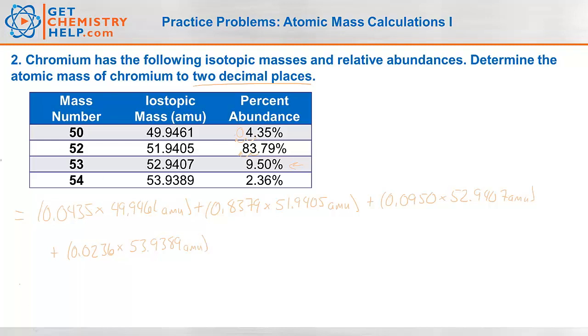Okay let's go ahead and solve these out. And remember it says to do everything out to two decimal places. So this one gives me 2.17 amu. Plus the next one comes out to be 43.52 amu. Plus the next one comes out to be 5.03 amu. Plus the last one comes out to be 1.27 amu. So I add those all together and I get 51.99 amu. So that would be the average atomic mass of chromium.